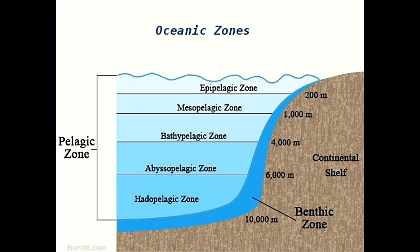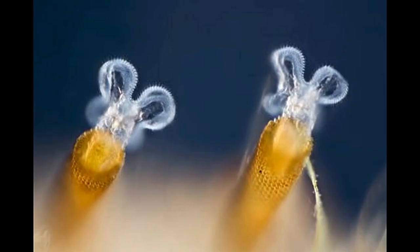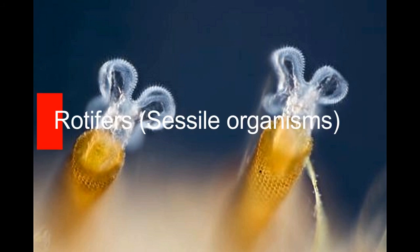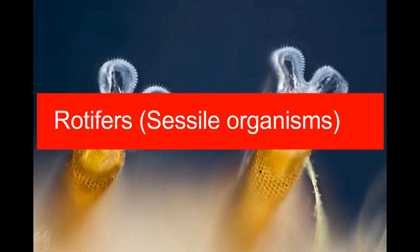Food chain: Benthos have to rely on the organic matter that drifts down from higher layers. They comprise scavengers, detritivores, and other animals that make up the very last link of the food chain. Pelagic organisms include photosynthetic plants and active herbivores and carnivores, which make up the very first links of the aquatic food chain. Mobility: A majority of benthos are sessile organisms, meaning they lack the ability to move freely. Conversely, most pelagic organisms are free-moving.